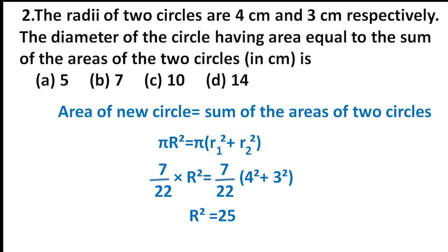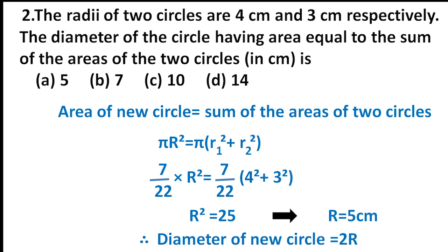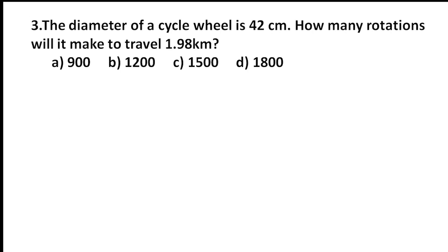So R² = 25. We get 4² = 16, 3² = 9, and 4² + 3² = 25. Therefore R = 5 cm. We need to find the diameter of the new circle, so diameter = 2R = 10 cm. The answer is the third option.